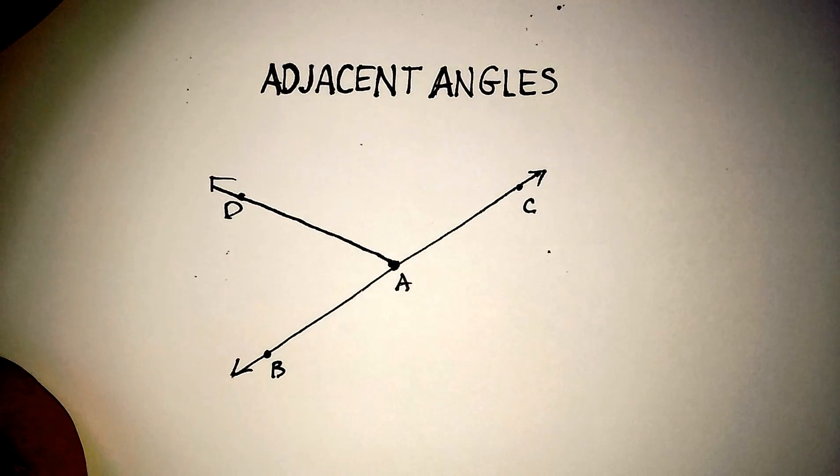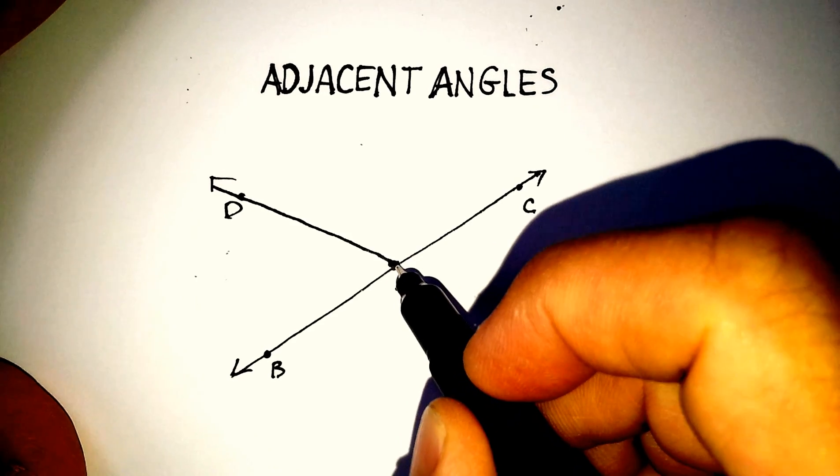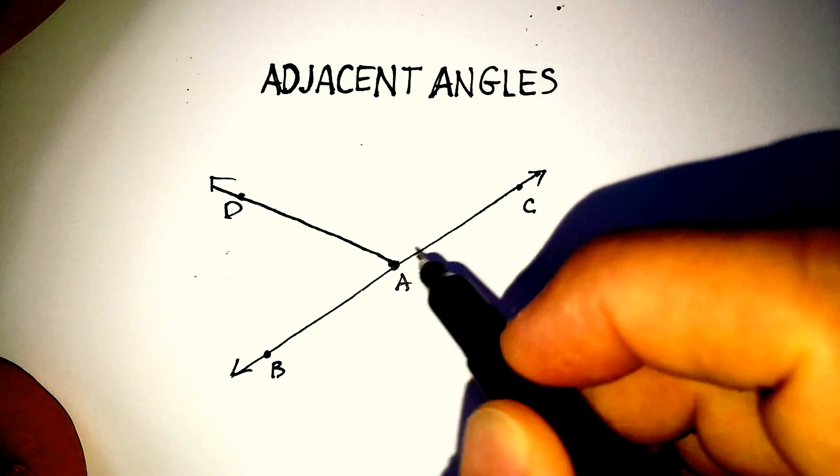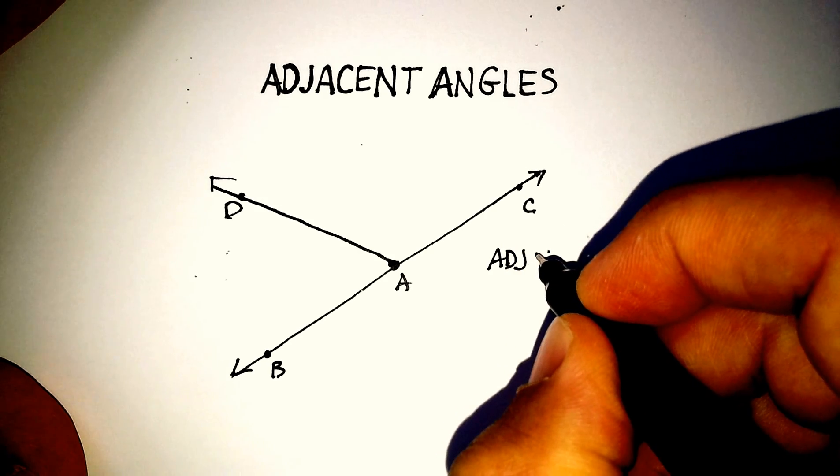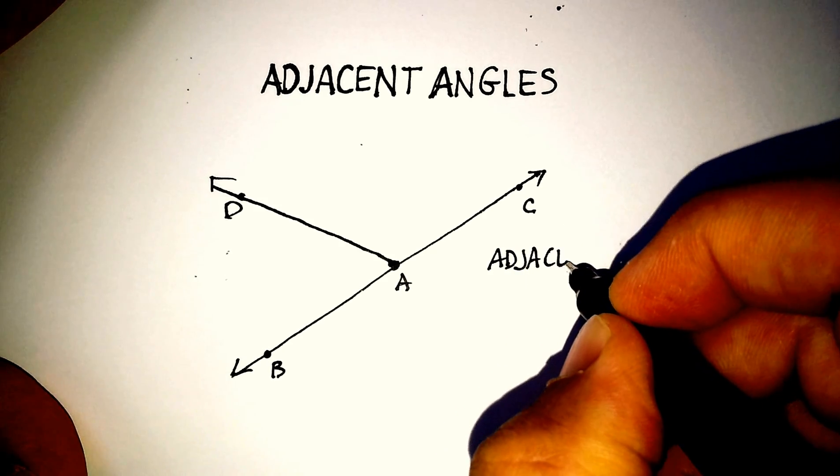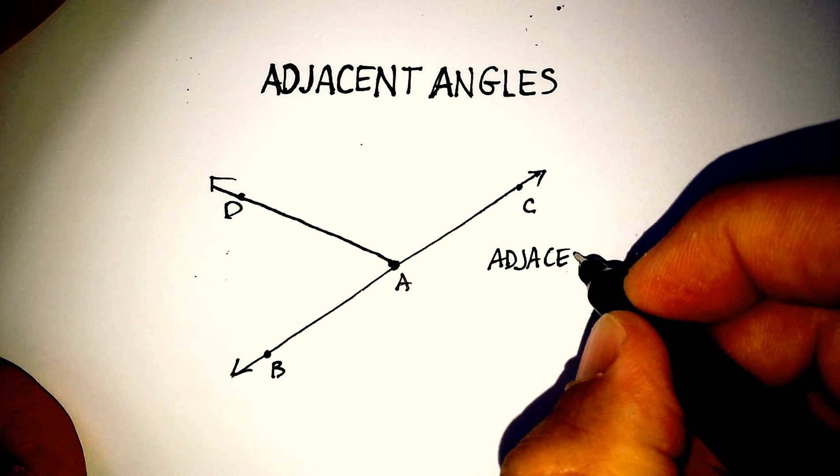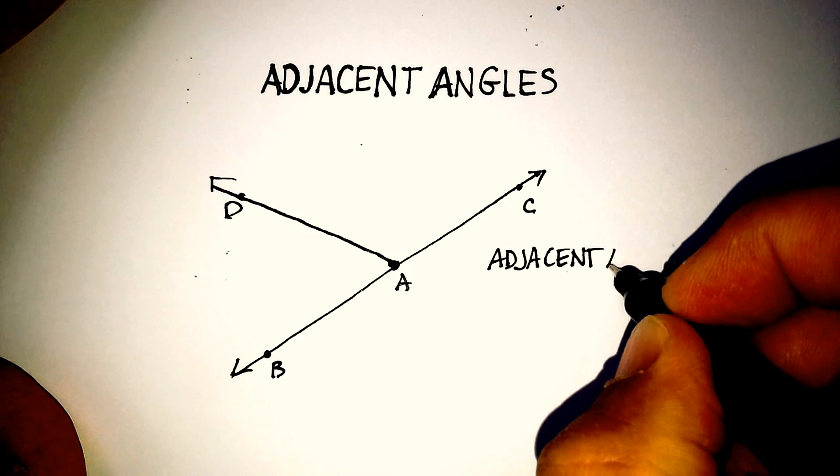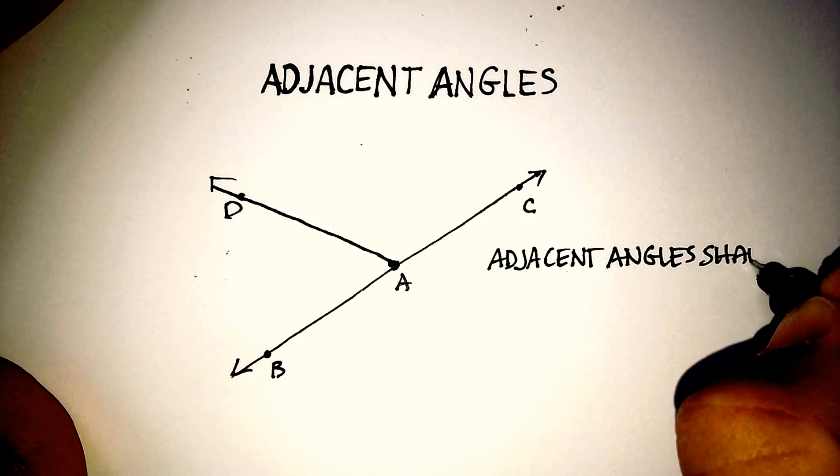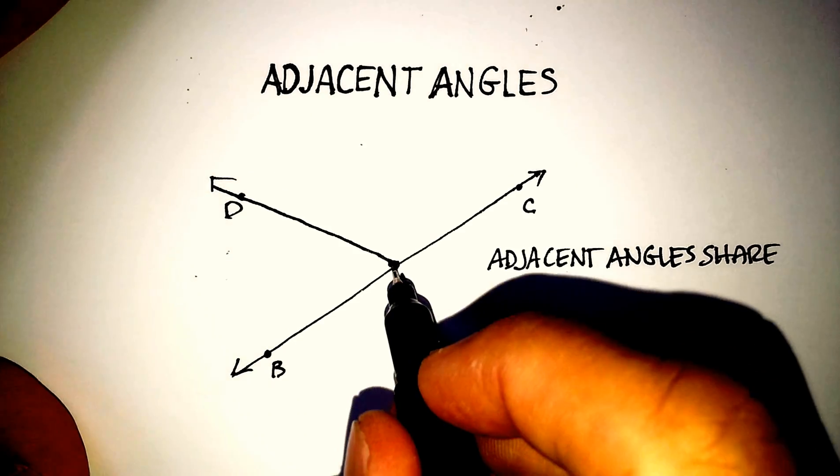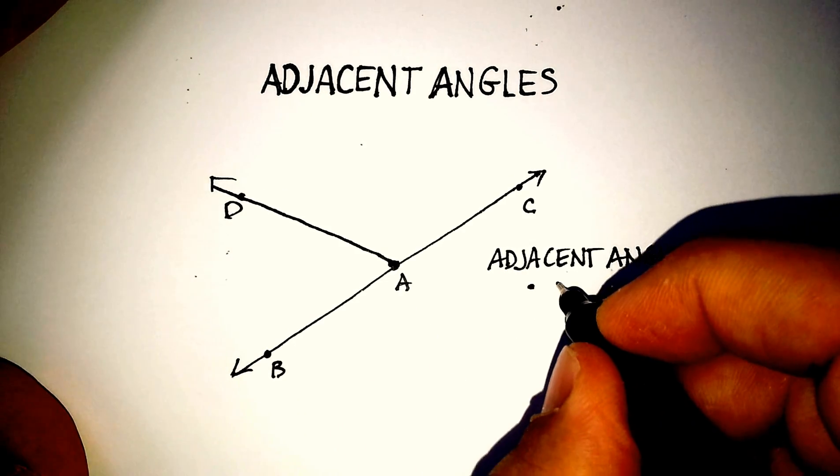Adjacent angles share a common vertex. Remember, these are called vertex. Let's just make a bunch of observations about adjacent angles. Adjacent angles share what? Well, they share a common vertex. So that's one thing that they share.